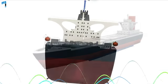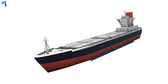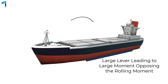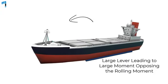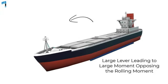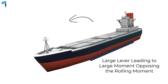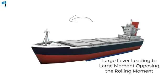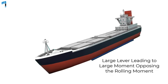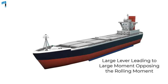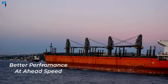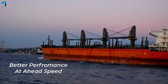Although relatively small in dimension, bilge keels have large levers above the rolling axis, and the forces on them produce a large moment opposing the rolling. Their effect is generally enhanced by ahead speed.